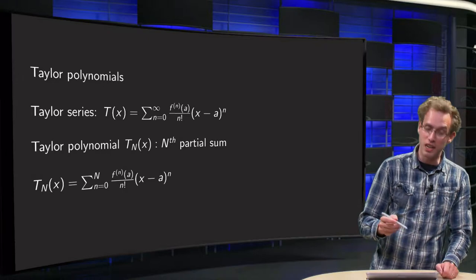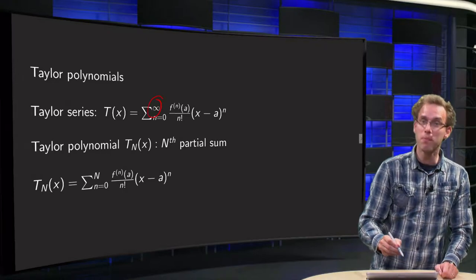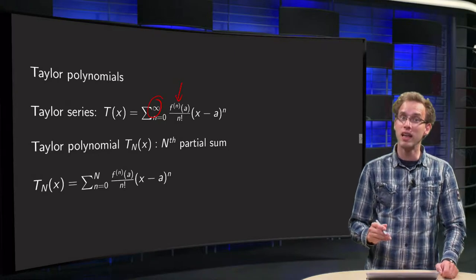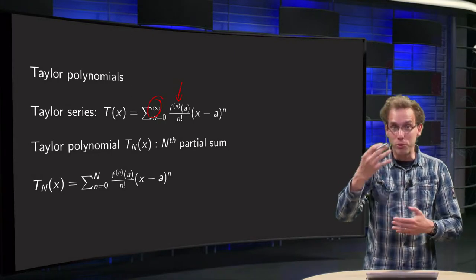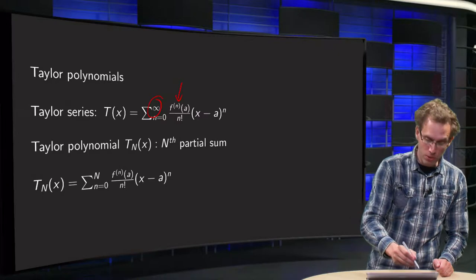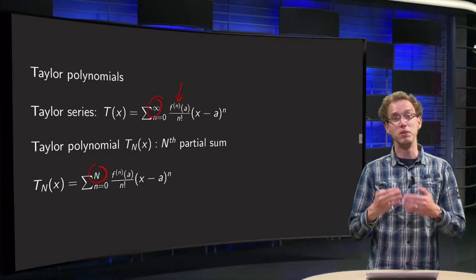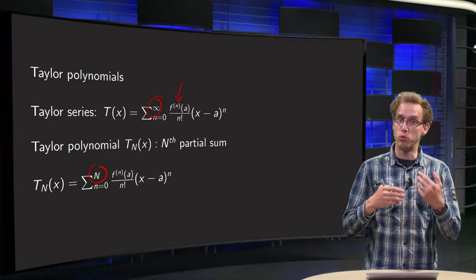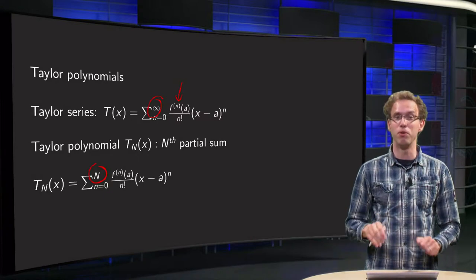So the general Taylor series sums up to infinity, and then you have to differentiate infinitely often. And now instead of going up to infinity, we will go up to capital N, which means that we will have to differentiate capital N times. So two or three or four times, a limited number of times.